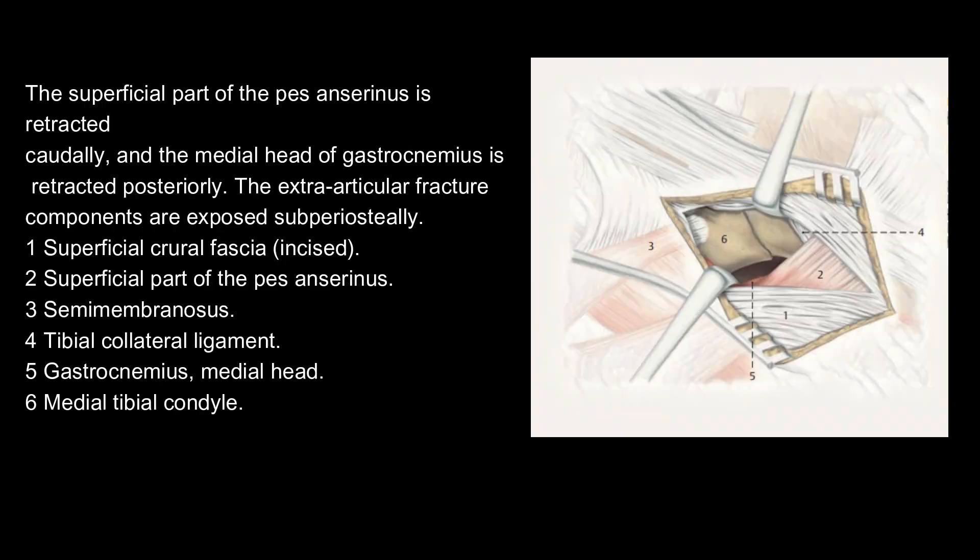The superficial part of the Pes anserinus is retracted cordially, and the medial head of gastrocnemius is retracted posteriorly. The extra-articular fracture components are exposed subperiosteally. Structures visible include: superficial crural fascia incised, superficial part of the Pes anserinus, semimembranosus, tibial collateral ligament, gastrocnemius medial head, and medial tibial condyle.